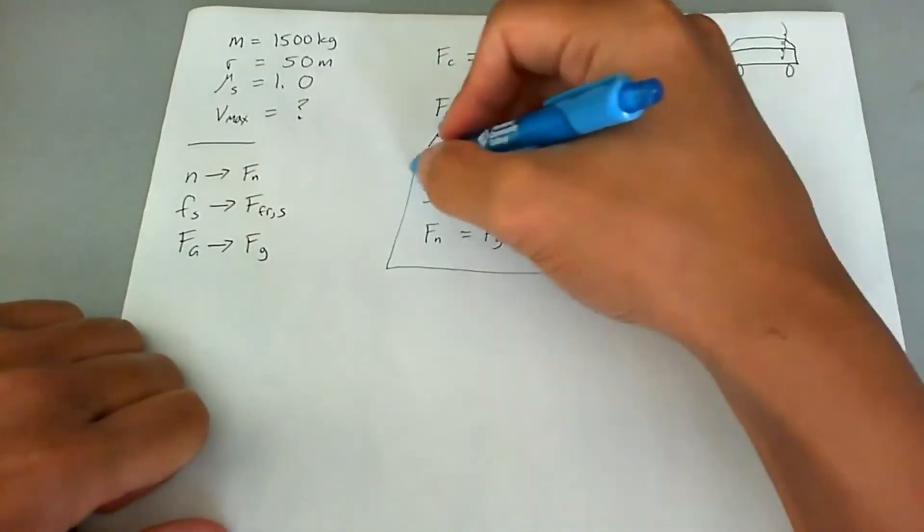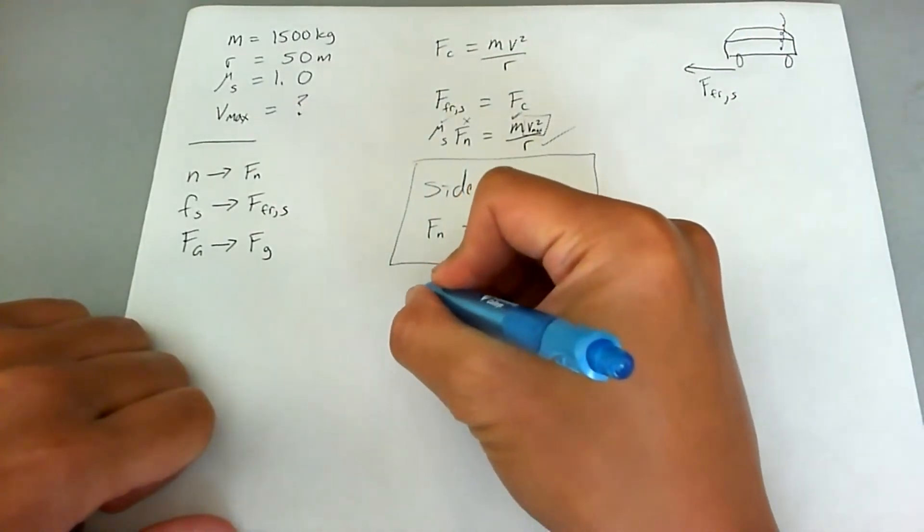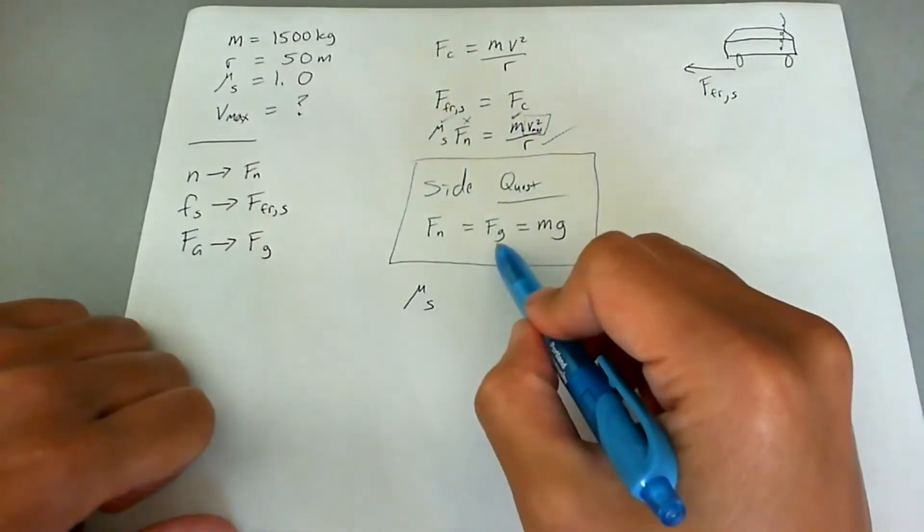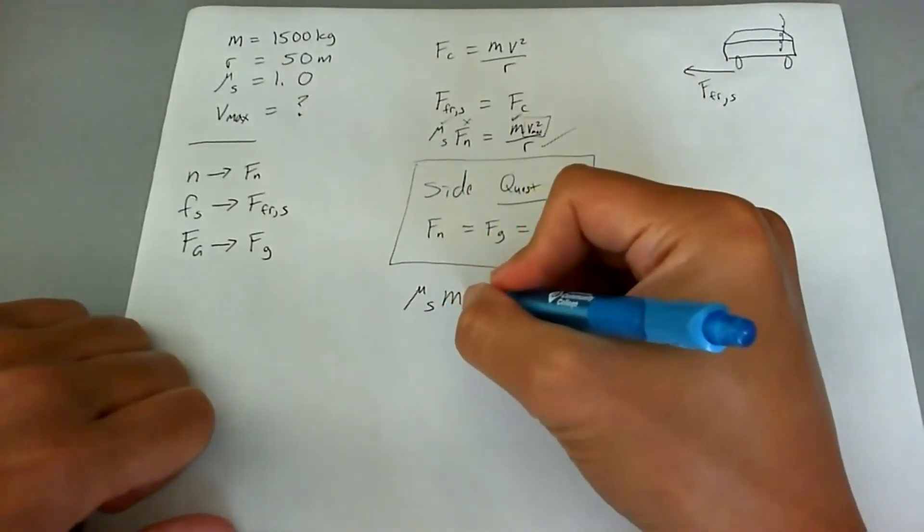Okay, so there's that side quest. Let's go ahead and go back to the original problem. We're going to have mu sub s. Instead of normal force, we're going to know it's mg. So it's mg.